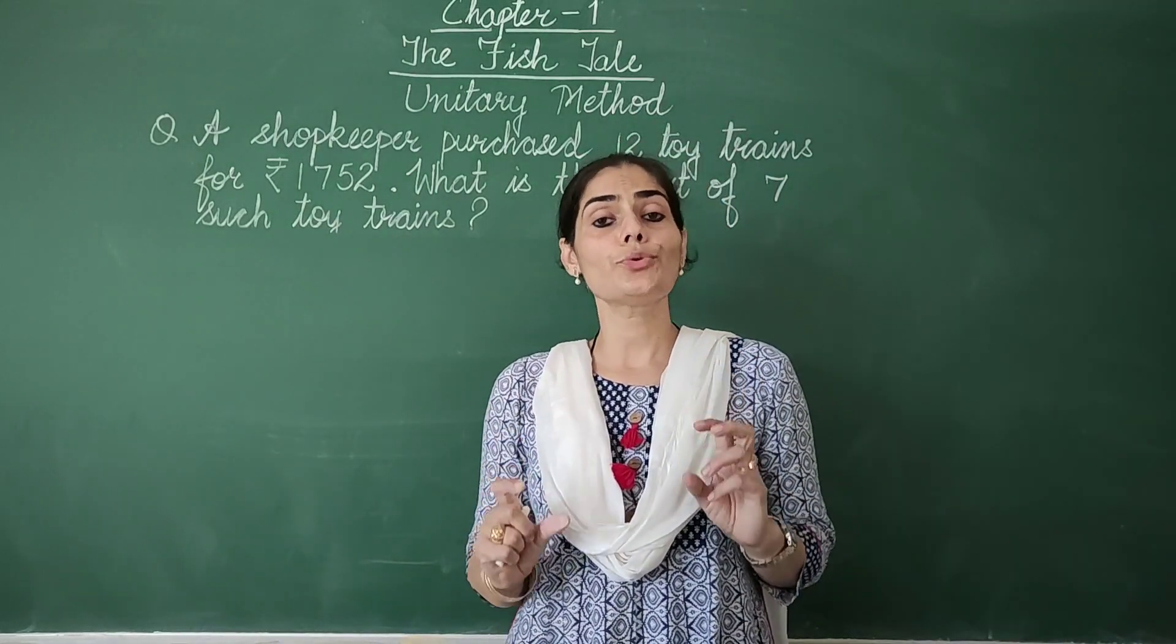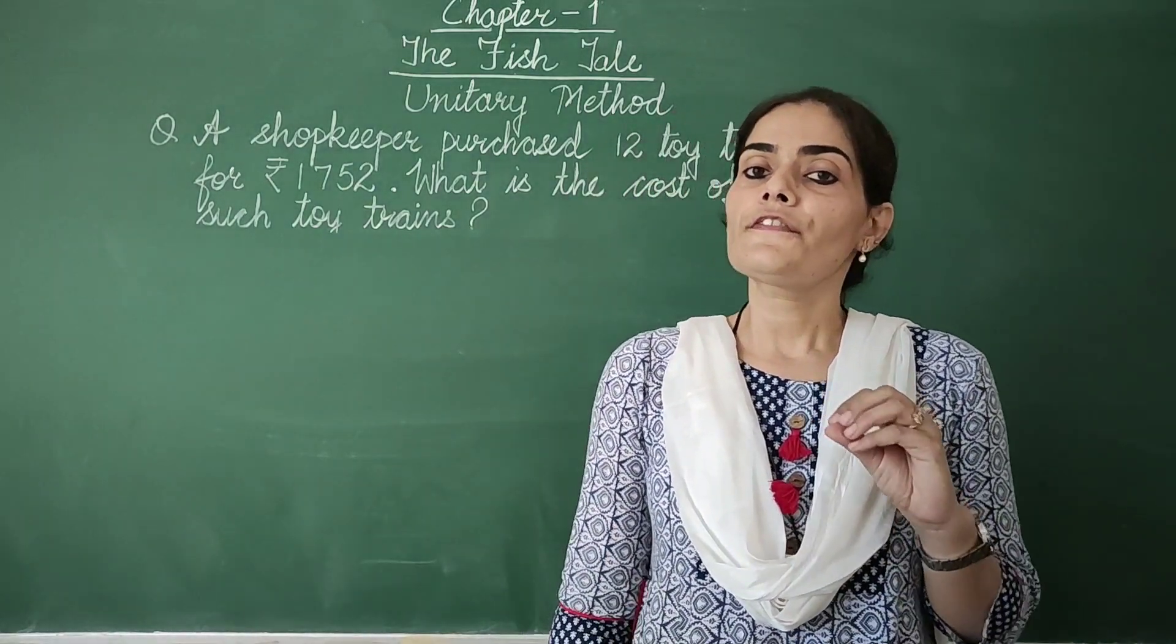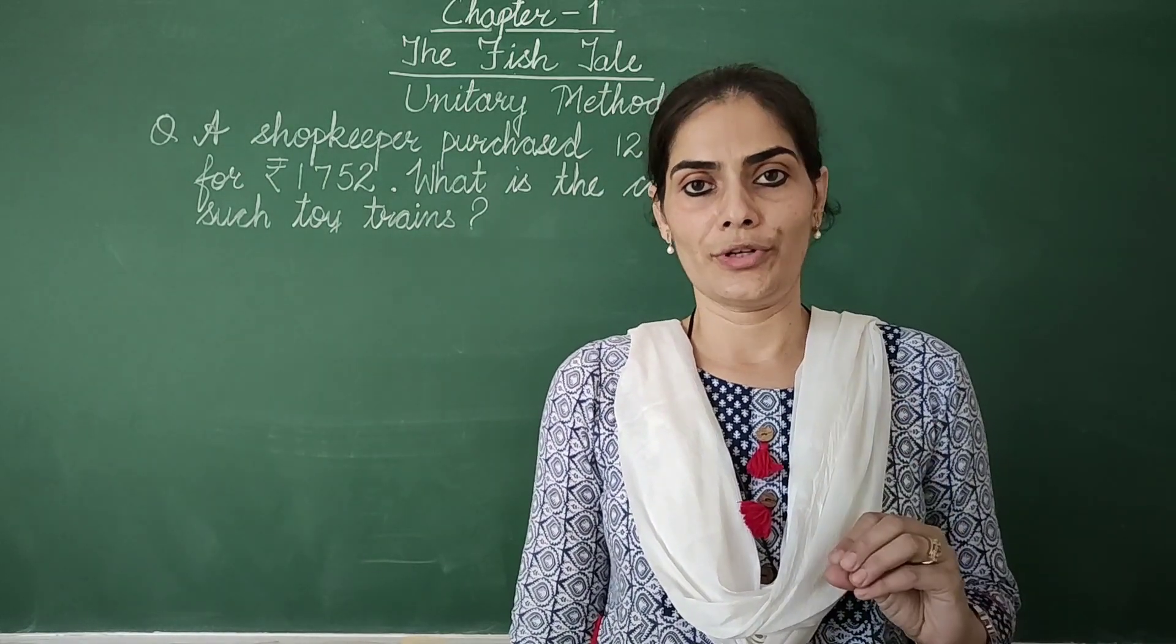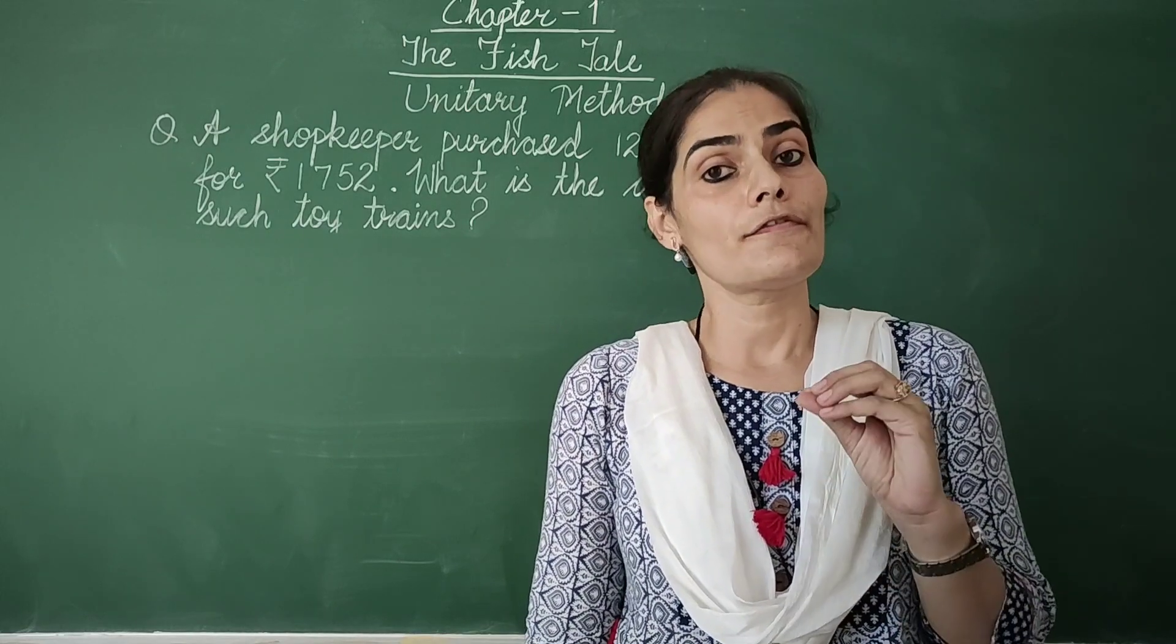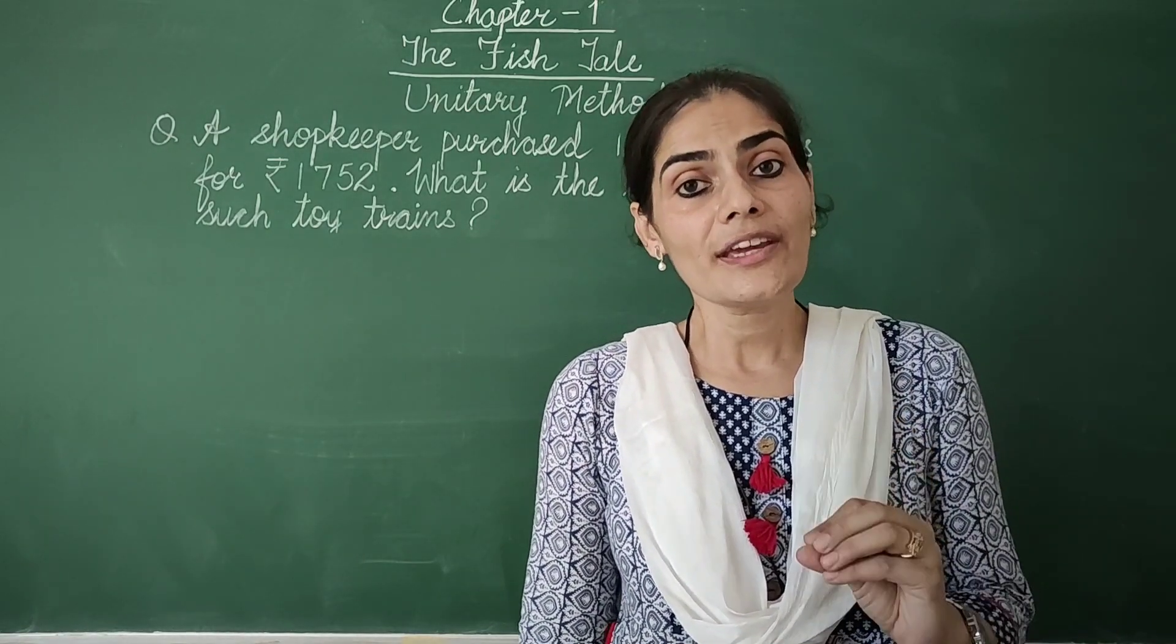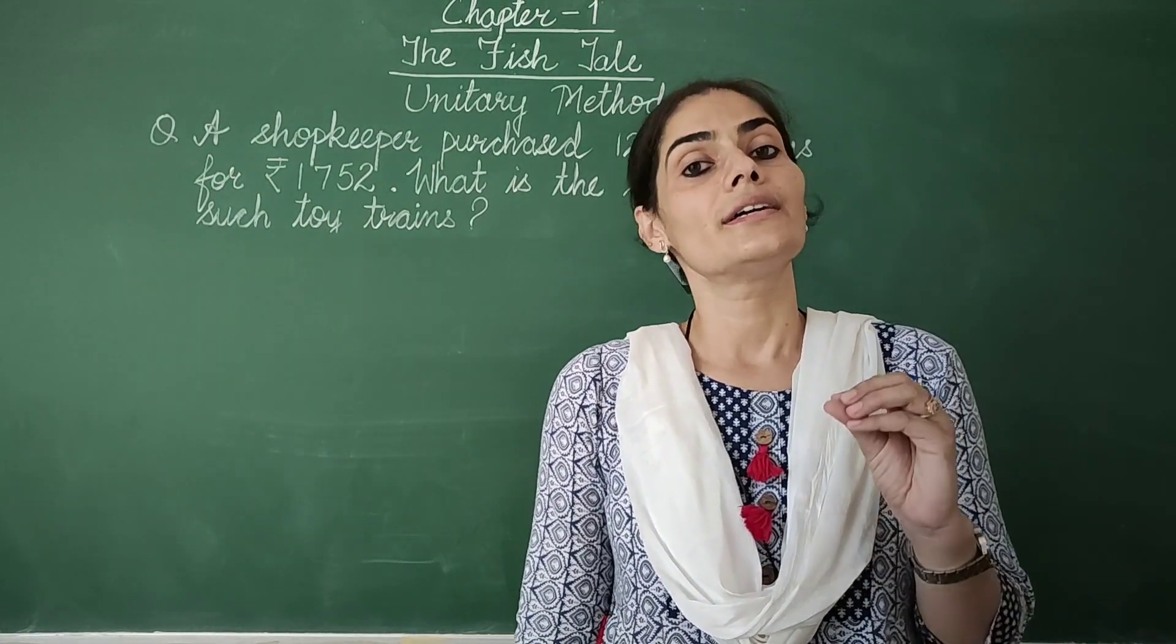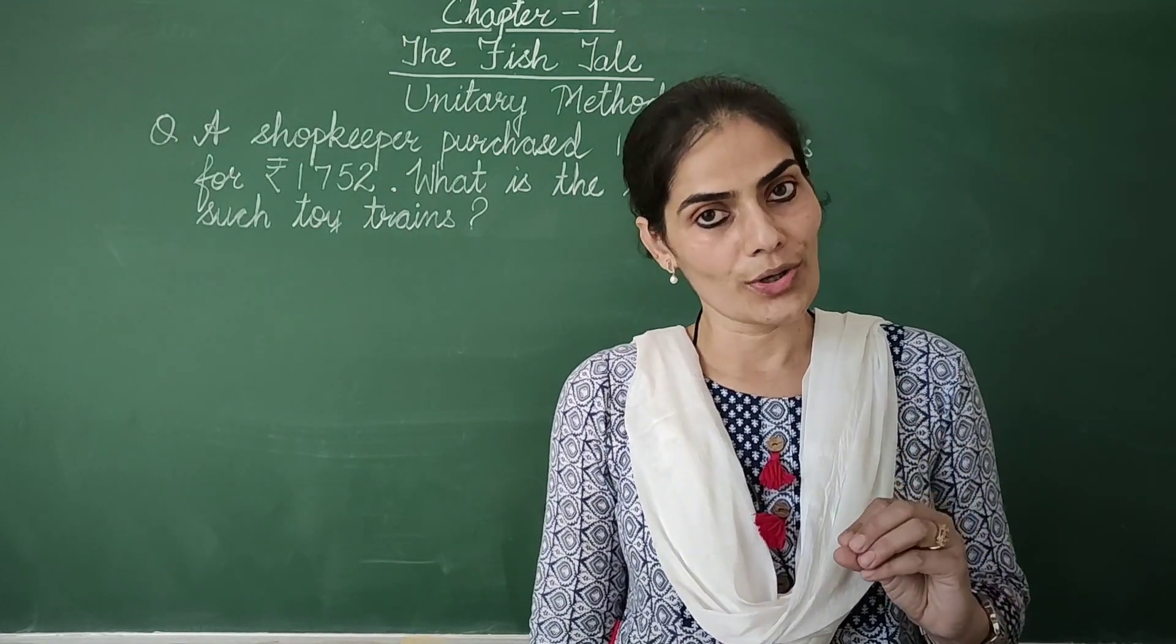So what do we do in this method? In this method, we first find the value of one unit from the given information. We first find the value of one unit. And after we get the value of one unit, with that we find the value of required number of units.